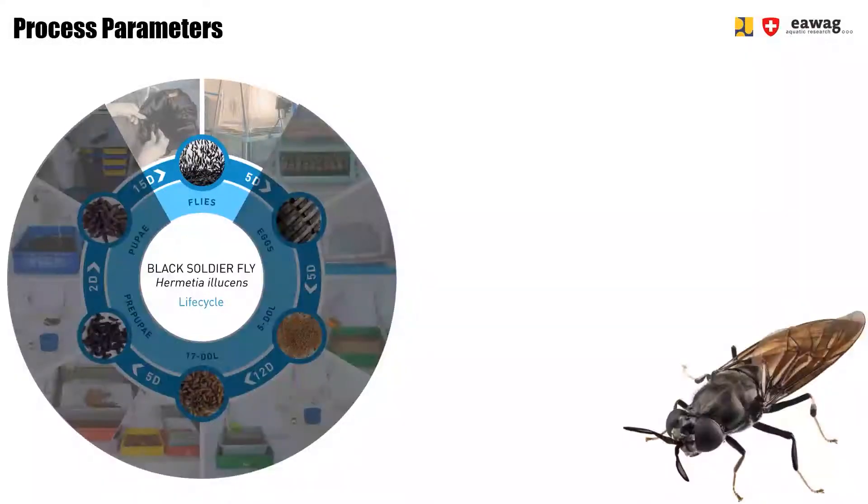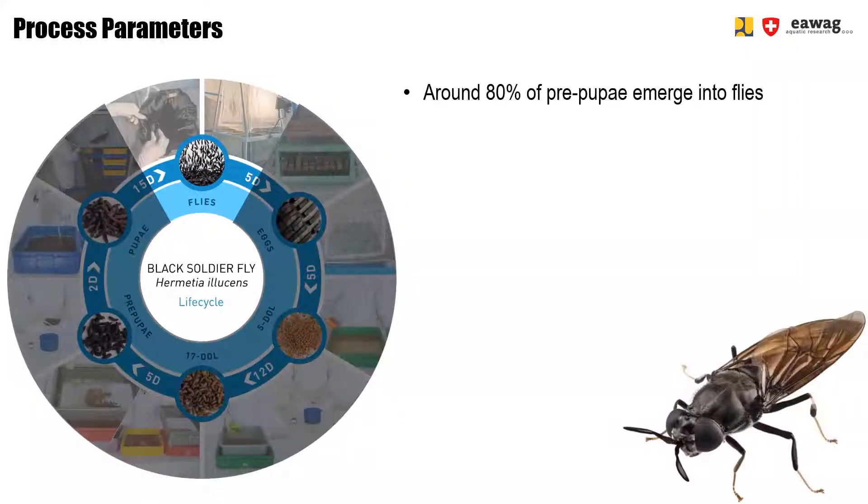In the fly stage, the pupae have emerged as flies and the flies are harvested in the loft cage. Normally, around 80% of the pre-pupae eventually emerge into flies through the process of pupation that happens in the dark cage.